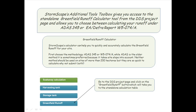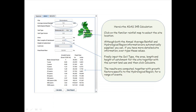Go to the DDS project page and click on the Greenfield Runoff button, which will take you to the standalone calculation table. Here is the ADAS 345 calculation.